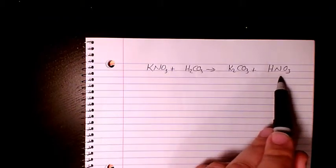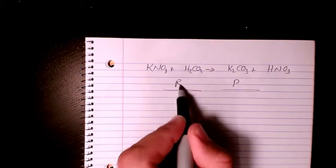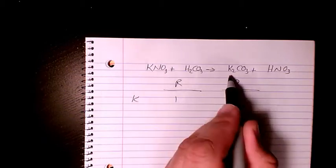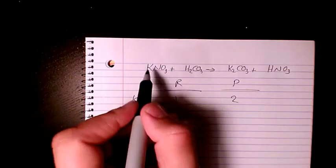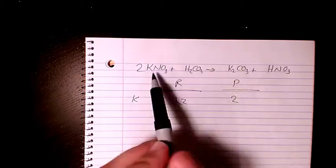So first of all, I start with potassium. We have potassium on the product side and the reactant side. We have one here, we have two here, so we need to make it two. So potassium is balanced.